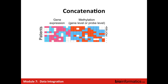The problems with concatenation that we found are: if the structure within each data type is different, you wash it out. If there's some correlation between genes you don't want to lose, you lose that. And if there are a few genes that are important, you're just increasing your measurements by a lot, which is also a problem.